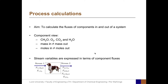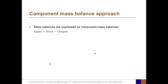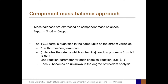The corresponding stream variables are also found in the output stream. Mass balances are expressed as component mass balances, meaning input plus production equals output. The new element here is the production term, because components can be produced or consumed. The production term is quantified in the same units as the stream variables — that could be moles or moles per hour. The production is quantified in terms of the reaction parameter, and it denotes the rate by which a chemical reaction proceeds from left to right. In our process calculations, we must include one reaction parameter for each independent chemical reaction, using the notation xi1, xi2, etc.